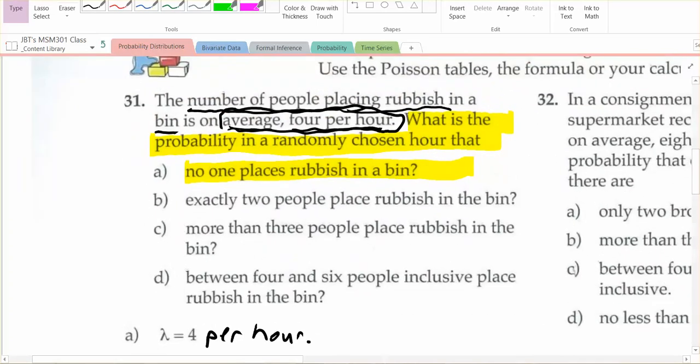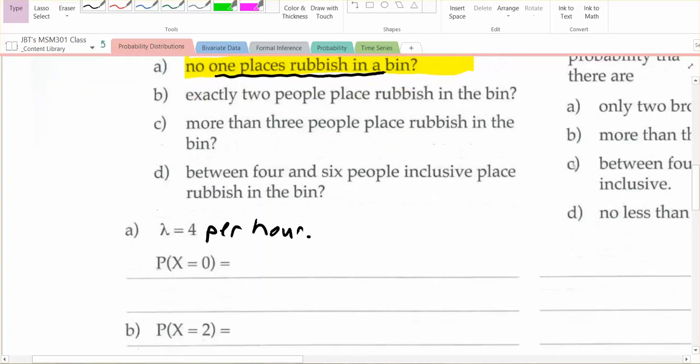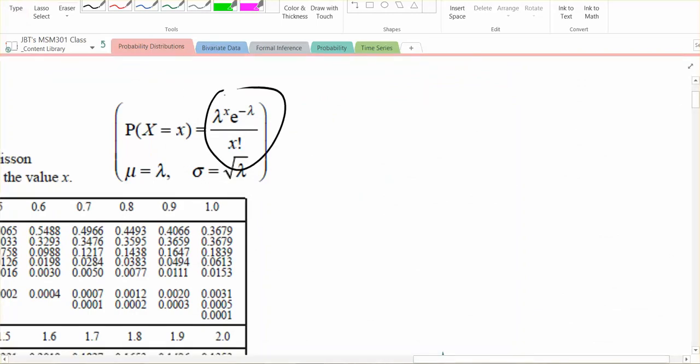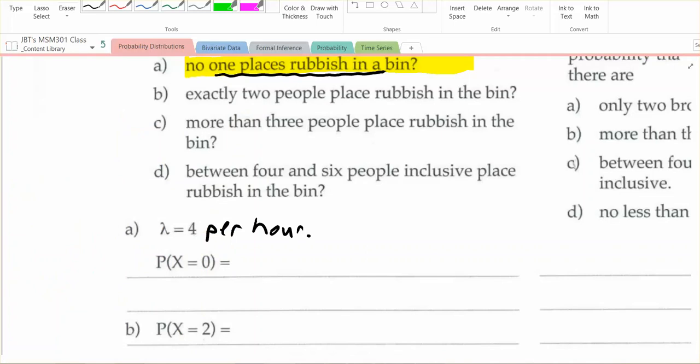Okay. Now, using the formula, probability of zero people placing rubbish in the bin. So our formula again looks like this. So we're just going to copy and substitute. So it's lambda to the power of x times e to the power of negative lambda all over x factorial. Substituting in. So lambda is 4. So that's going to be 4. And x is 0. So 4 to the power of 0 times, and then e to the power of negative lambda, so e to the power of negative 4, divided by x factorial, so 0 factorial.